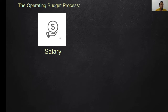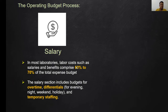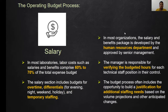Regarding the operating budget process: first, salary. In most labs, 60 to 70% of the total expense budget is spent on salary. The salary section includes budget for overtime, differentials — meaning allowances for different shifts — and temporary staffing for part-timers. In most organizations, this is performed by the Human Resource Department. The manager is responsible for verifying the budgeted hours for each technical staff position. The budget process often includes the opportunity to build a justification for additional staffing needs based on volume projections and other anticipated changes.